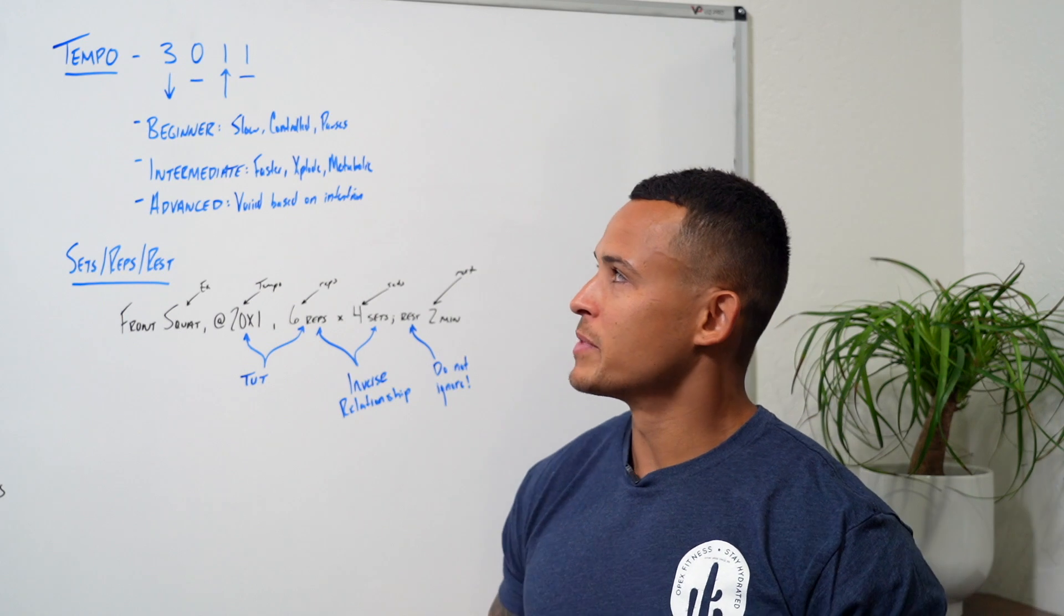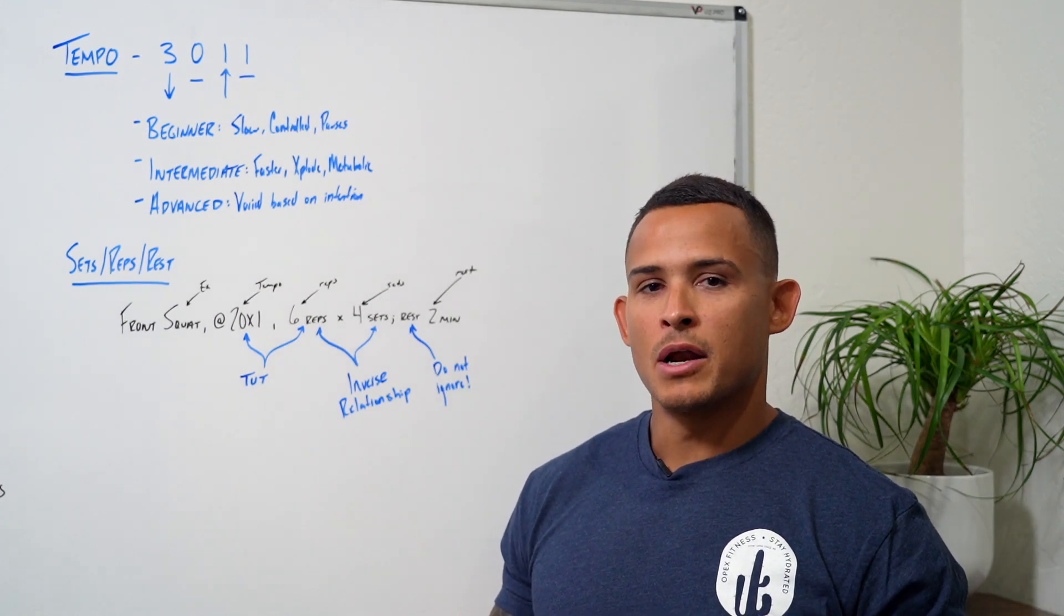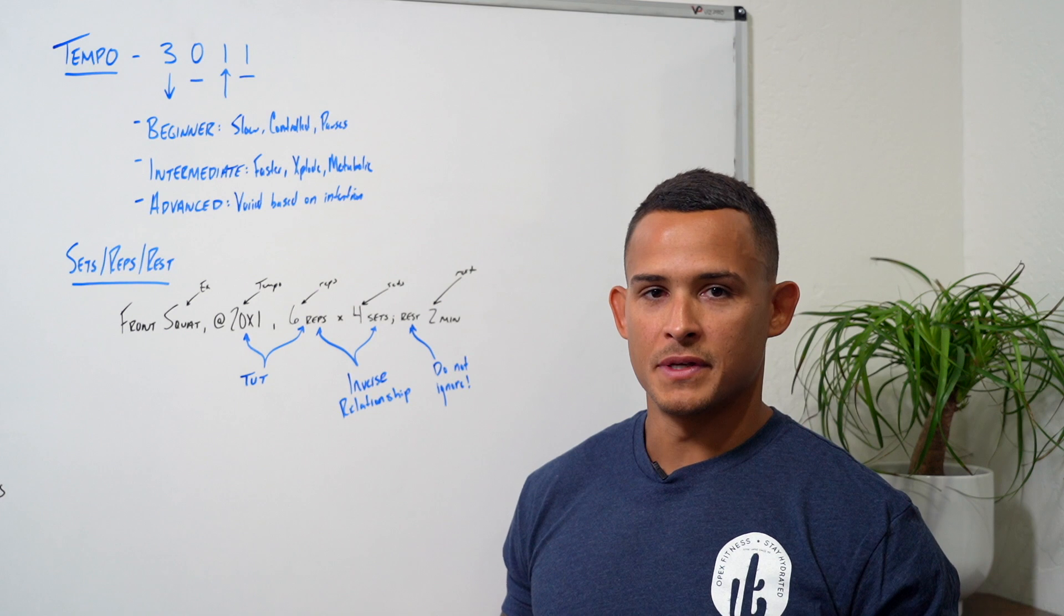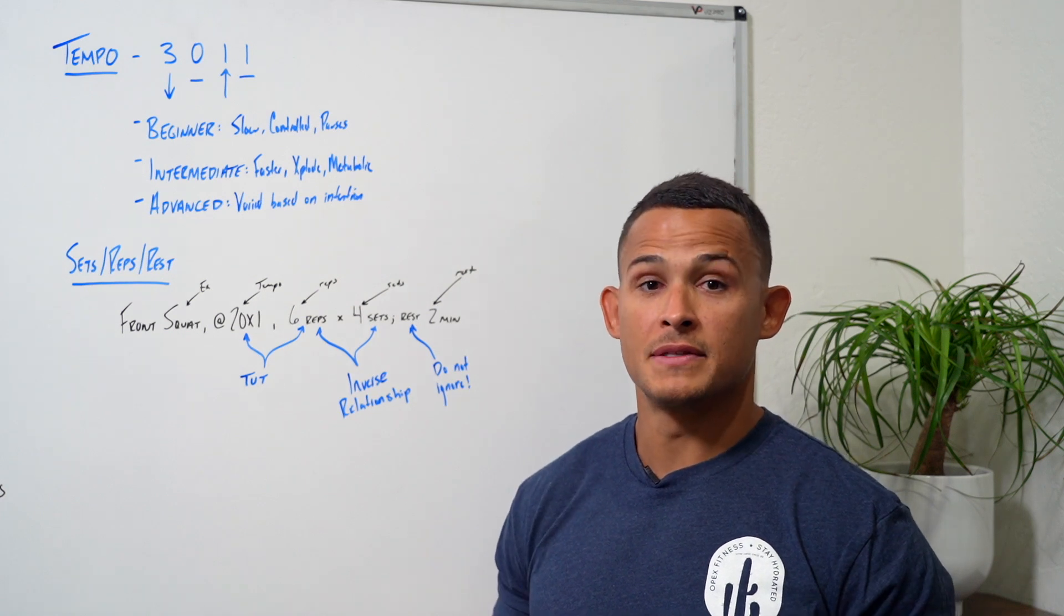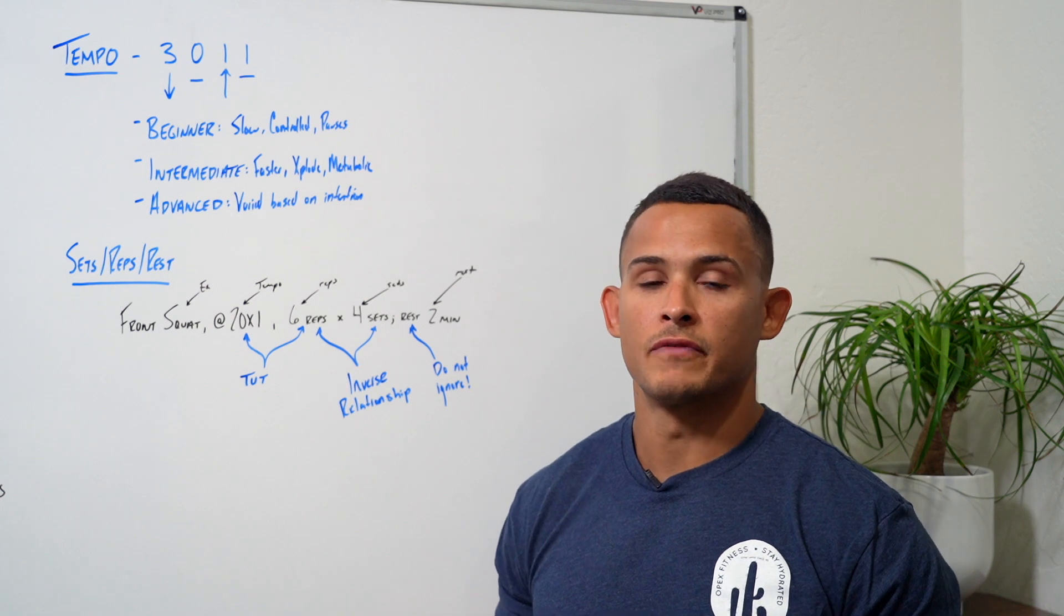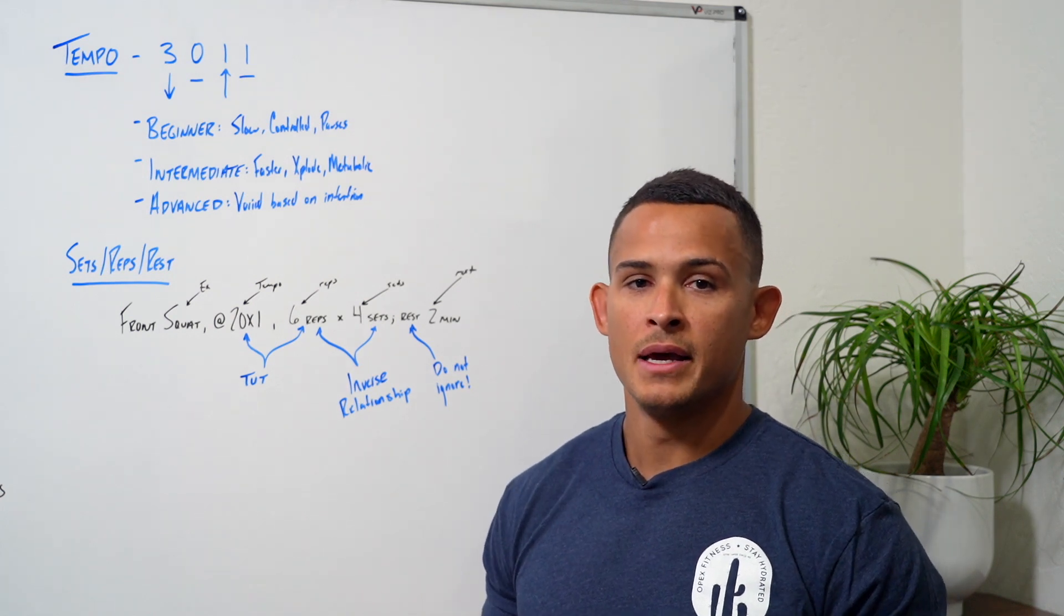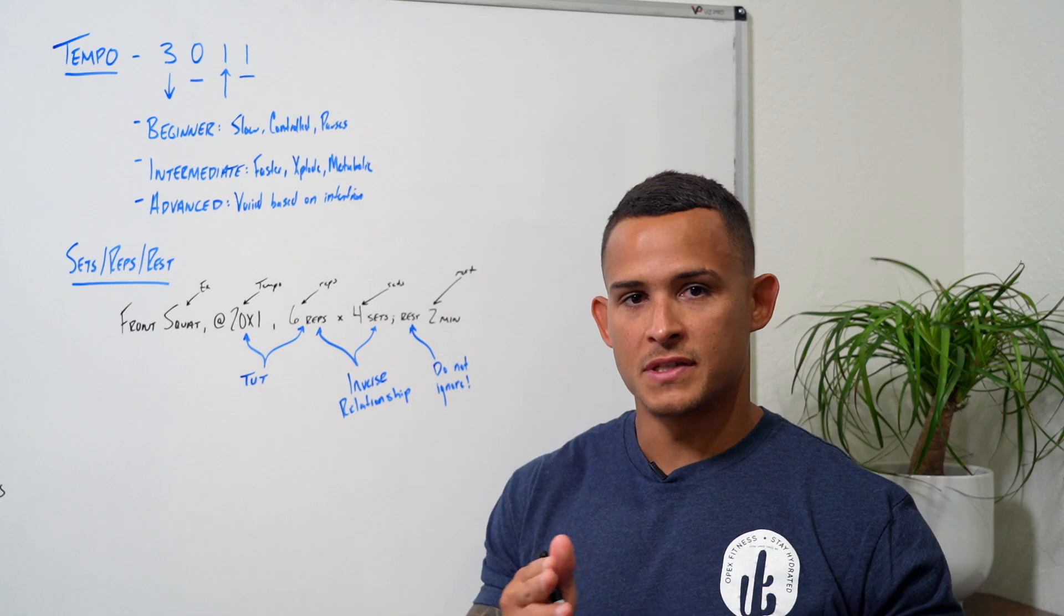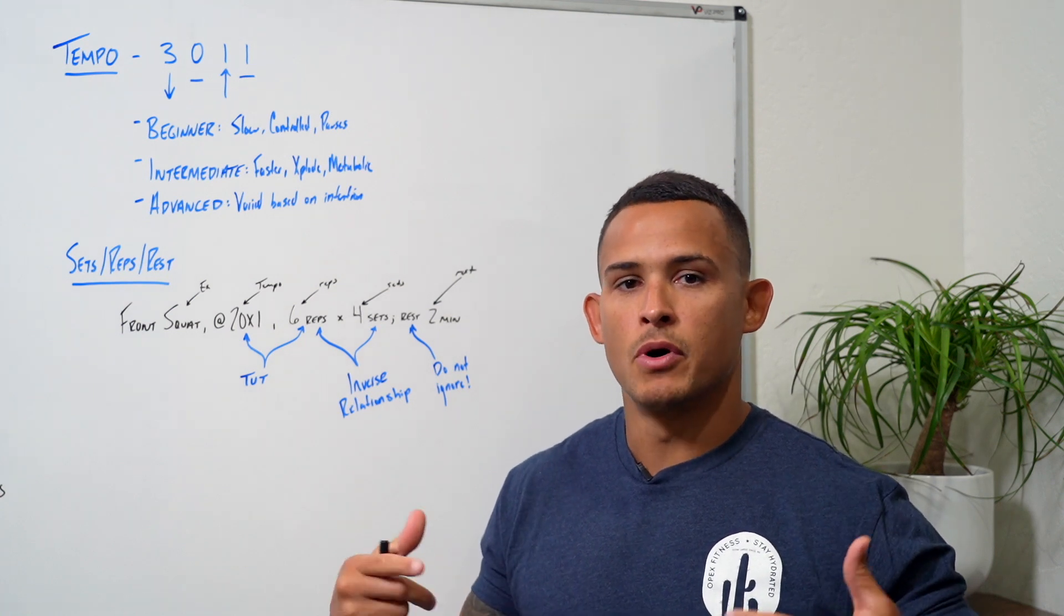Next, the intermediate. We can start looking at eliciting a metabolic response with this client. So what does that mean? That means that the rep range might look very similar. The time under tension might look very similar as the beginner client. But now the goal is to challenge that motor control.